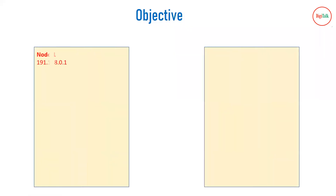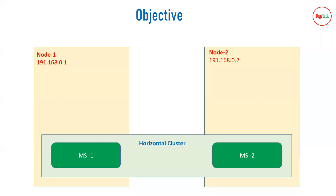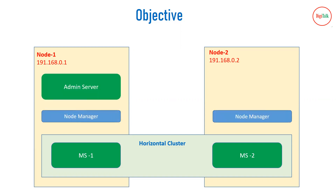So what is our objective? We have two nodes: node 1 and node 2. Node 1 is listening on IP address 192.168.0.1 and node 2 is listening on IP address 192.168.0.2. We want horizontal clustering on both nodes, where managed server 1 is running on node 1 and managed server 2 is running on node 2. Our admin server will be on node 1, and we will have two node managers — one on node 1 and one on node 2 — to manage both managed servers.